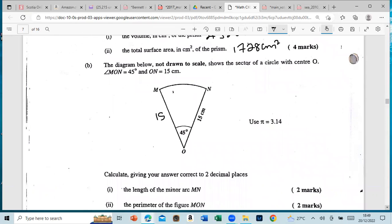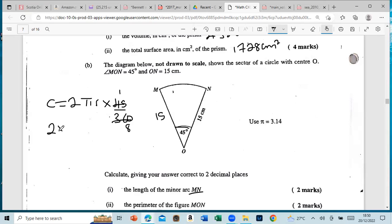Calculate, giving your answer correct to two decimal places, the length of the minor arc MN. So we want to find the length of MN right here. That's a part of the circumference, so for the entire circle it will be 2πr, times 45 because this portion here is the 45. So that's a fraction of the circle, which is 360. So this goes into itself one, and this is one-eighth. So it will be 2 times π as 3.14, times the radius which is 15.